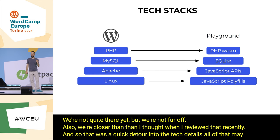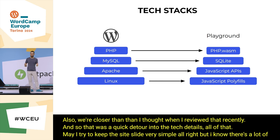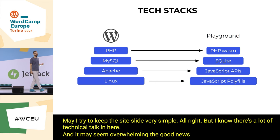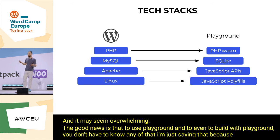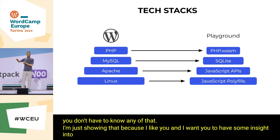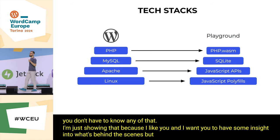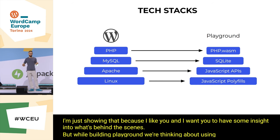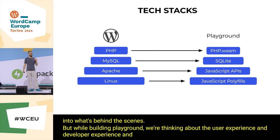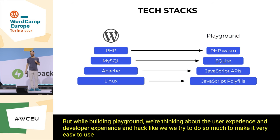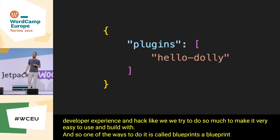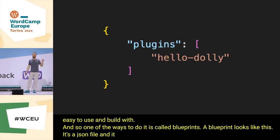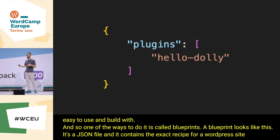To use playground or even build with it, you don't have to know any of that technical detail — I'm sharing it because I like you and want you to have some insight into what's behind the scenes. While building playground, we're thinking deeply about user experience and developer experience. One of the ways we make it easy is called blueprints. A blueprint is a JSON file containing the exact recipe for a WordPress site that runs in playground.